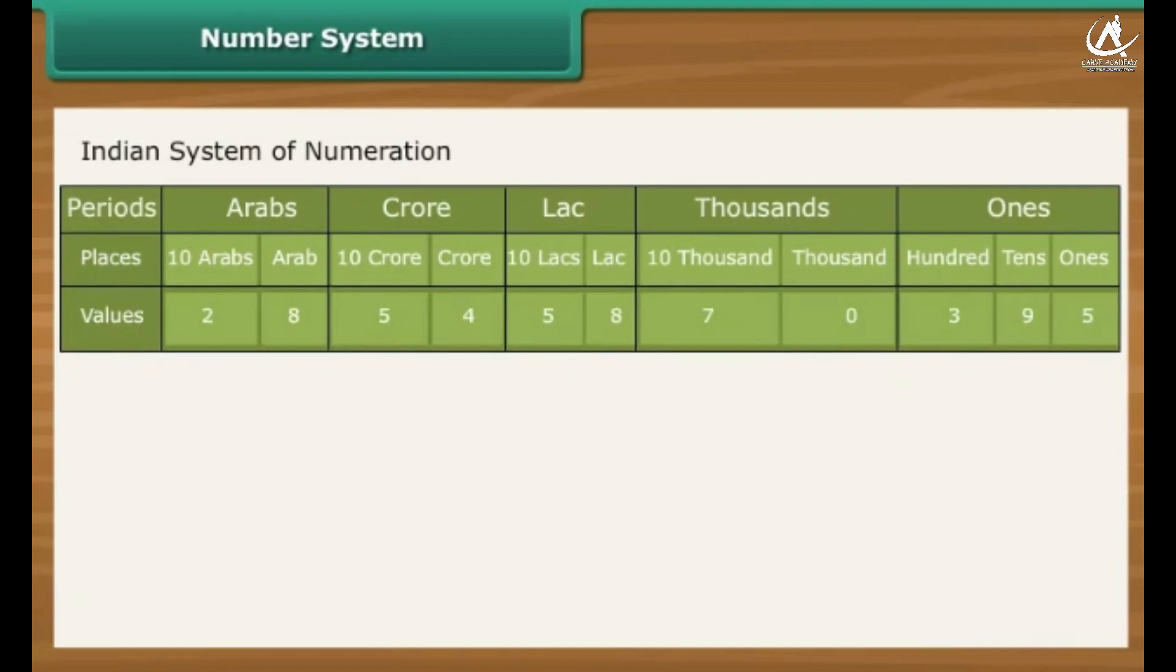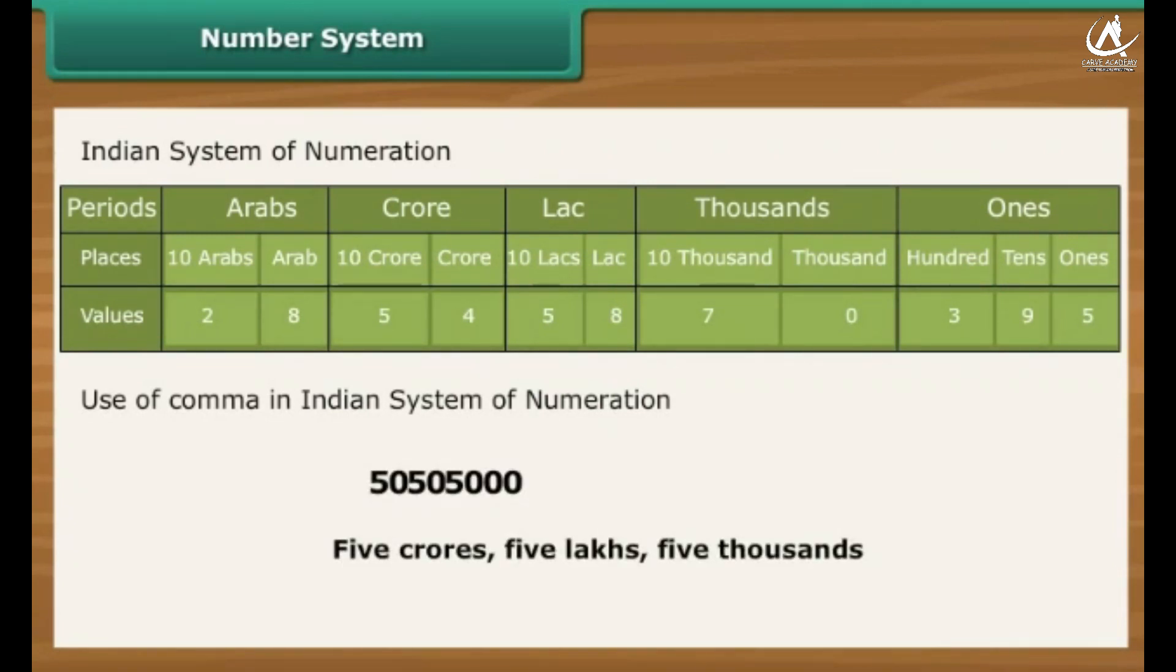Number system. In our Indian system of numeration, we use ones, tens, hundreds, thousands, and then lakhs and crores. Commas used to mark thousands, lakhs and crores. The first comma comes after hundreds place, three digits from the right and marks thousands. The second comma comes two digits later, five digits from the right. It comes after ten thousands place and marks lakh. The third comma comes after another two digits, seven digits from the right. It comes after ten lakh.